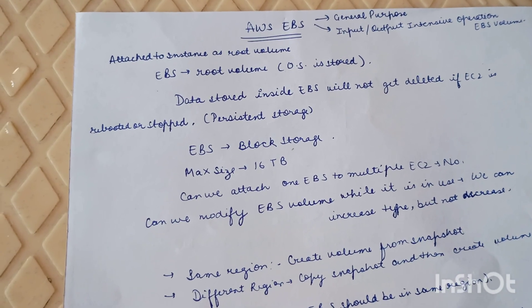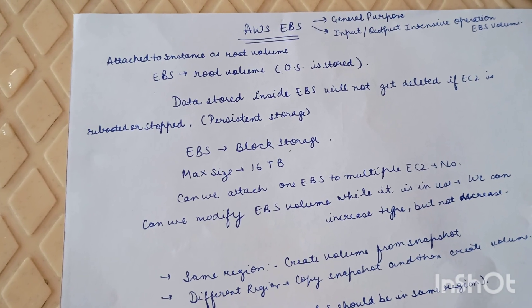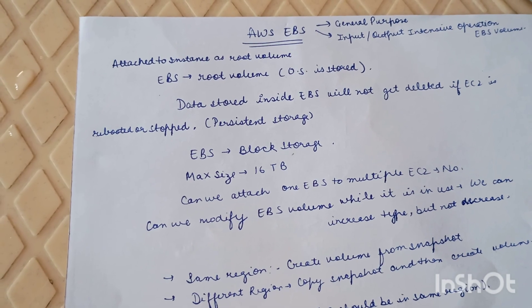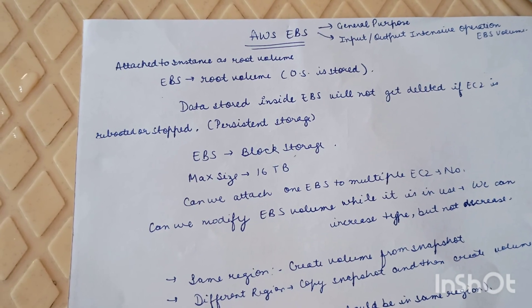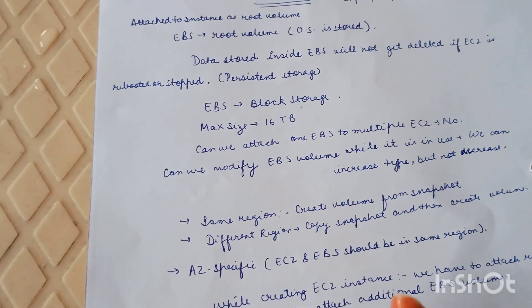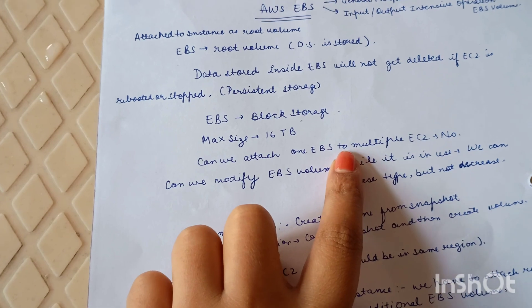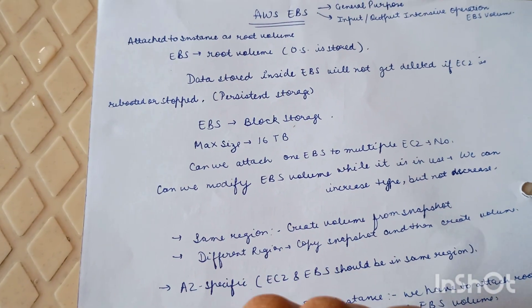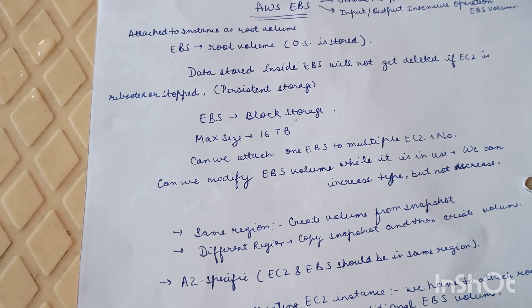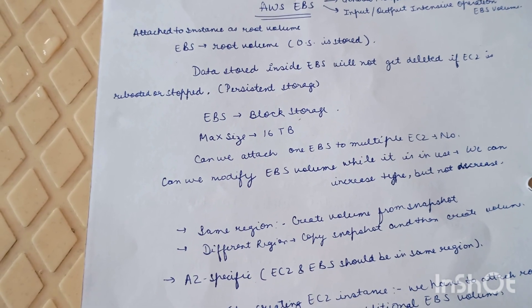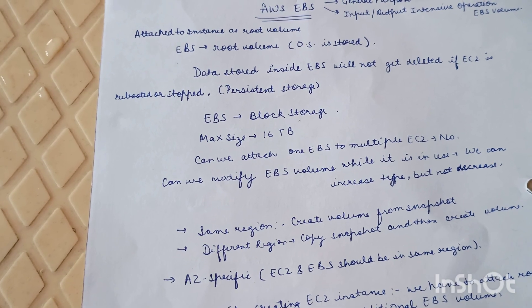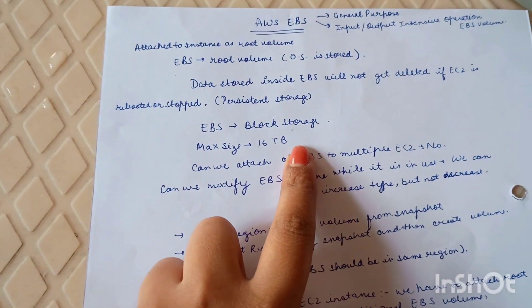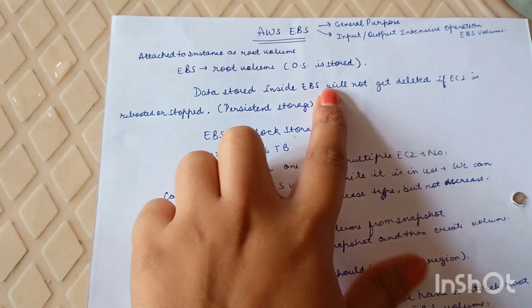When creating an EC2 instance in AWS, we attach a root volume — that is also an EBS volume — where the OS is stored. We can also attach additional EBS volumes to our EC2 instance. Key points to note: you cannot attach one EBS to multiple EC2 instances, the EC2 instance and EBS must be in the same region, and the maximum size is 16 TB.